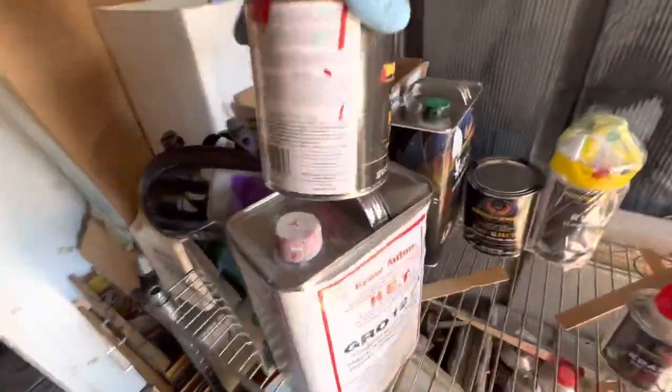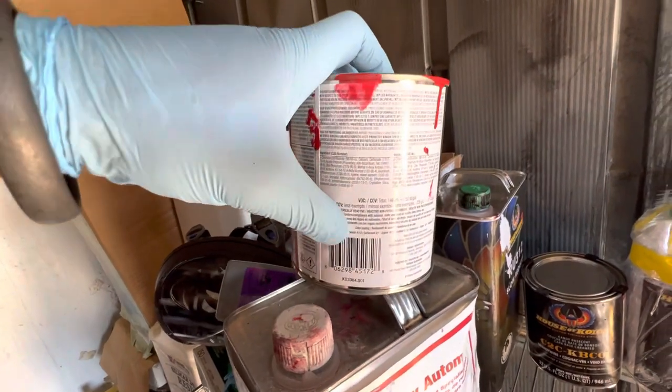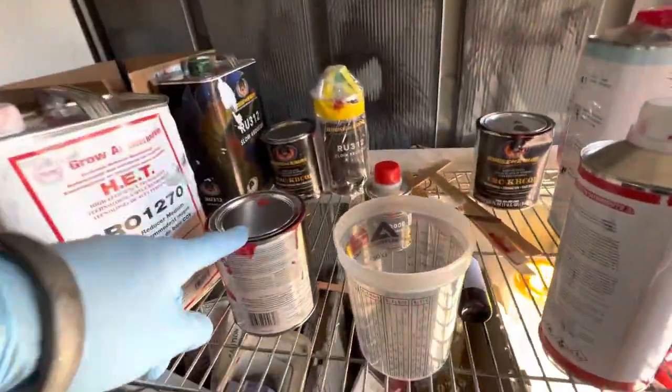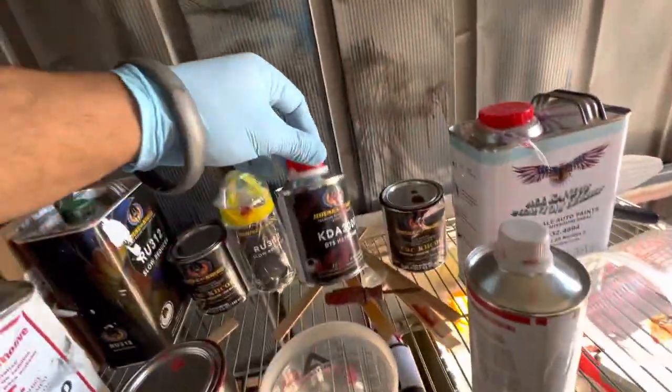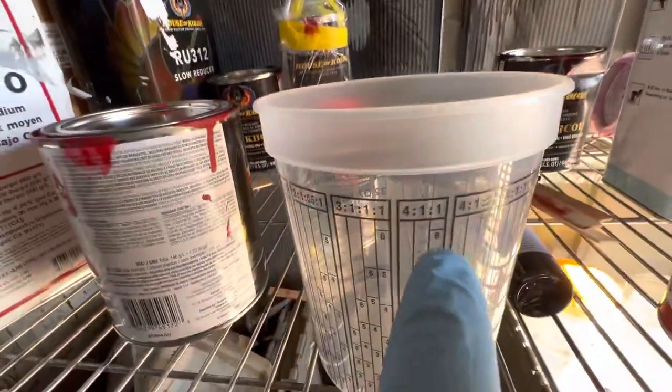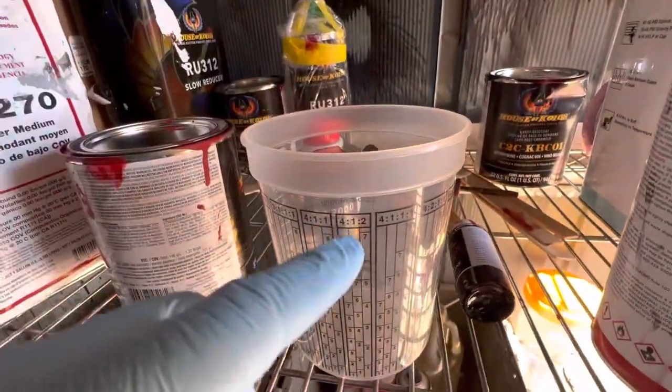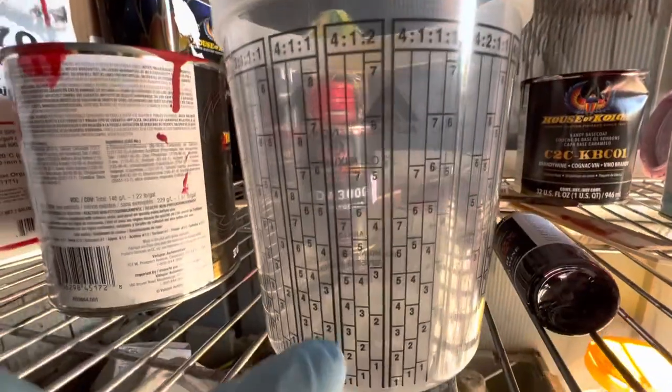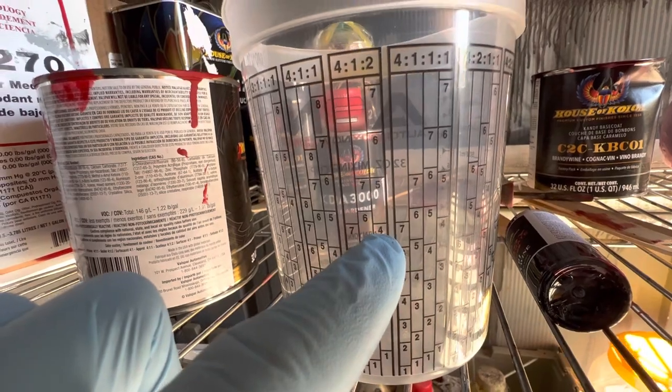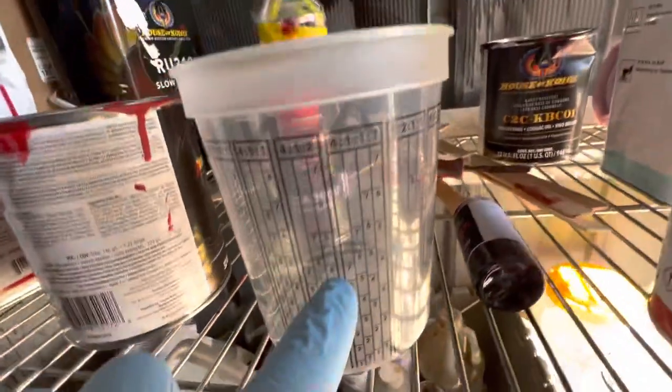It'll tell you. For sealer, it says four to one to two right there. So you need four parts of this, one part of the hardener, and then two parts of the reducer. You won't go here, you would go here. So having one of these cups is pretty much mandatory. Four to one to two, and I'm gonna go ahead and get that done.